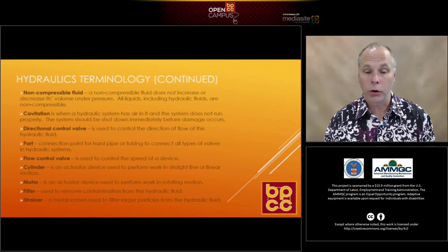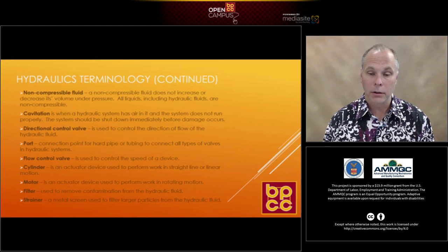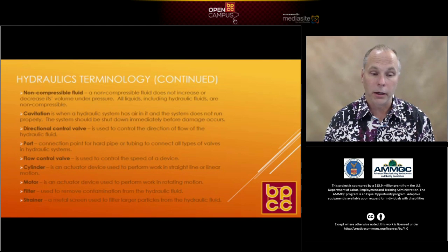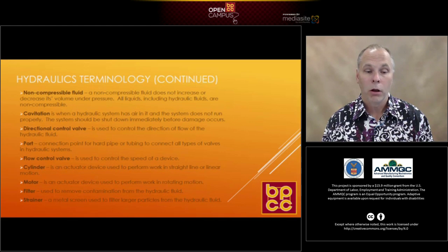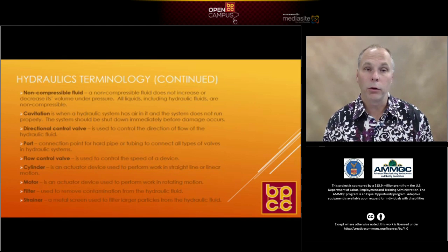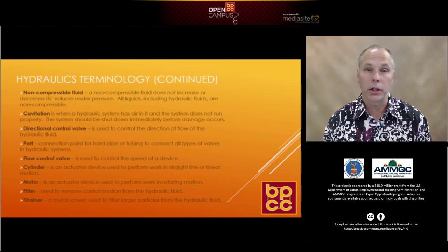If you have an elevator where you're currently at, chances are that elevator — especially if it's only three floors or less — is running off of a cylinder. It expands straight up or comes down in a straight line depending on the size or length. A motor is an actuator device used to perform work in a rotating motion, similar to an electric motor but instead of electricity, fluid runs through it and the vanes are caught by the hydraulic fluid, which allows the shaft to spin, and a pulley or attachment on that shaft does the work.